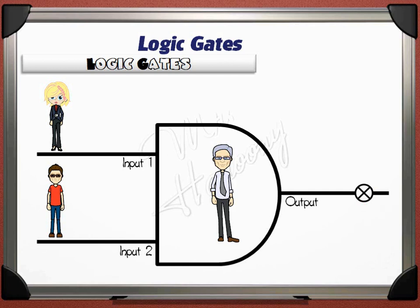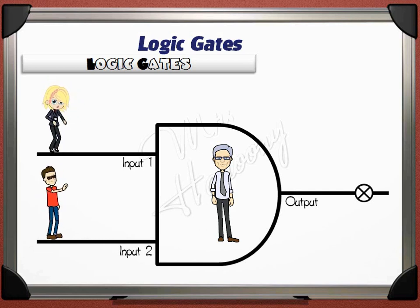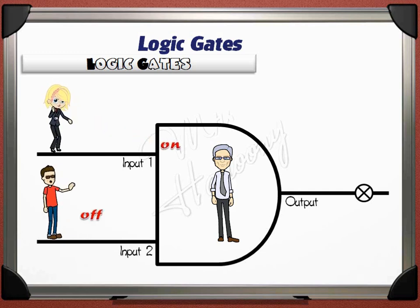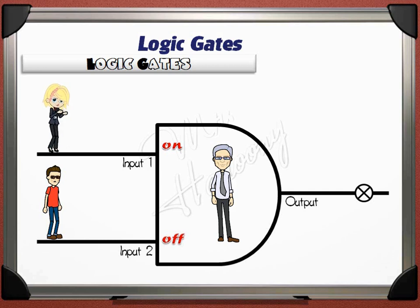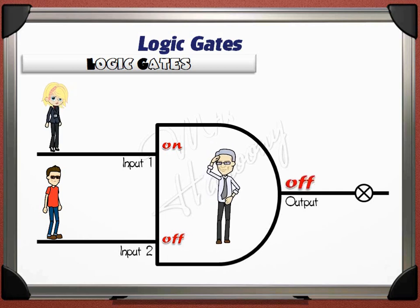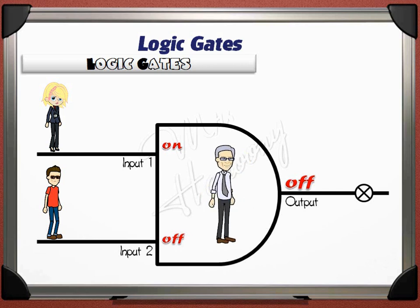The logic gate receives two orders from its two inputs, thinks about those inputs, and then makes a decision according to the two inputs given and the type of the logic gate. One input orders the lamp on, the other orders the lamp off. The logic gate takes the two inputs and decides to give an output that makes the lamp off. This is just an example; later we will know this is called the AND logic gate.